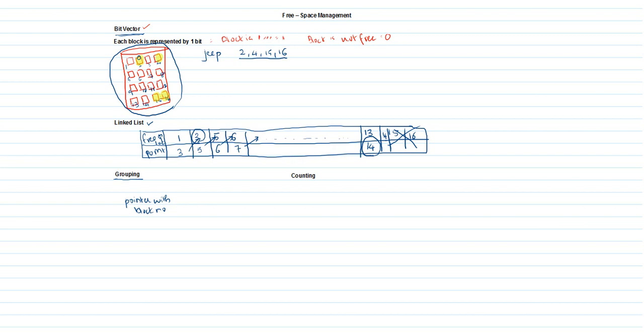Consider again that file G is holding blocks 2, 4, 15, and 16 — they are marked as occupied. The first free location is block 1. Is there any nearby continuous block that can be grouped? No, so block 1 holds only one free block. Its pointer holds the count of 1.